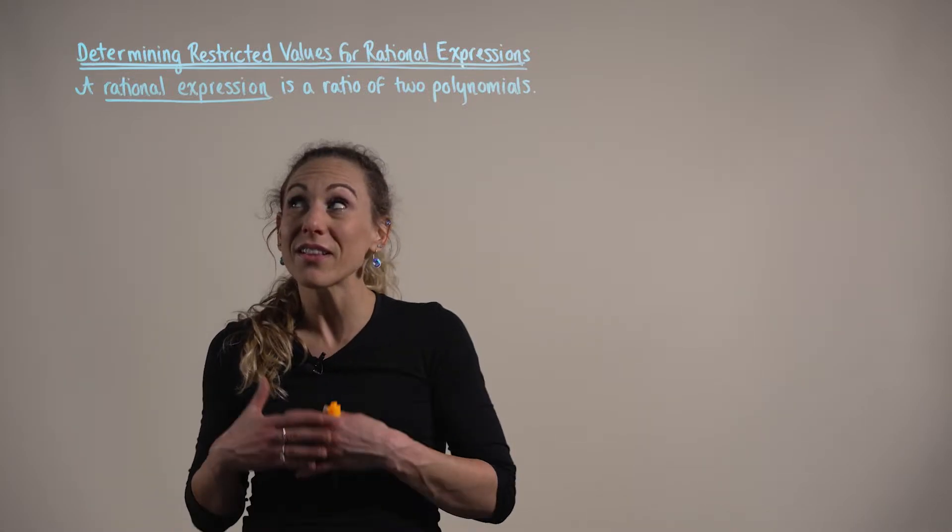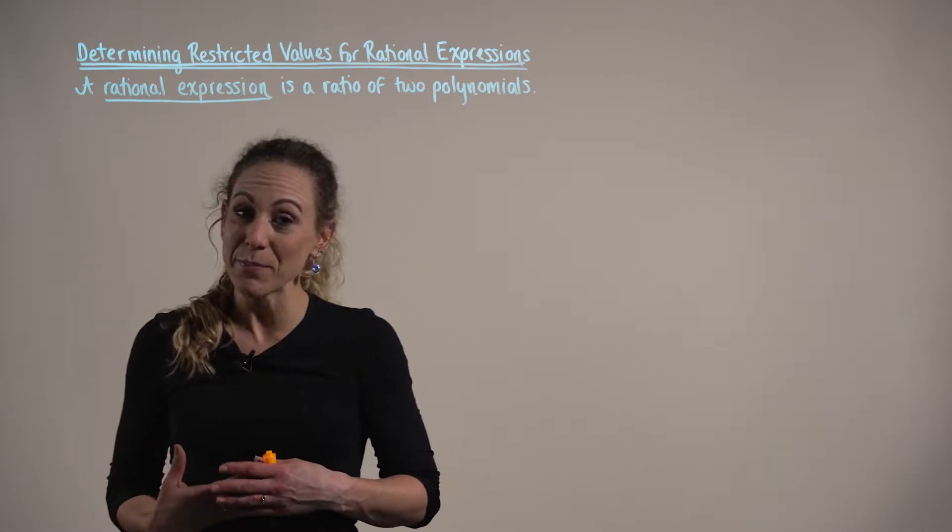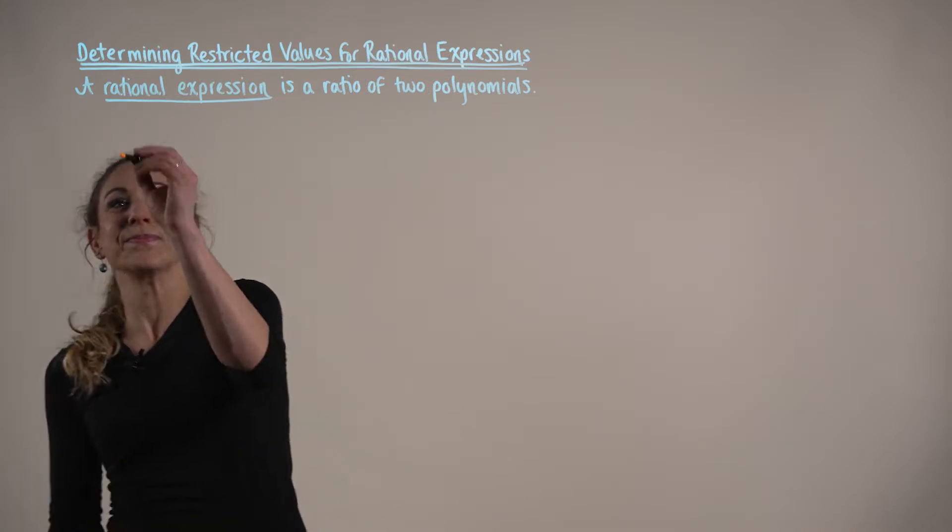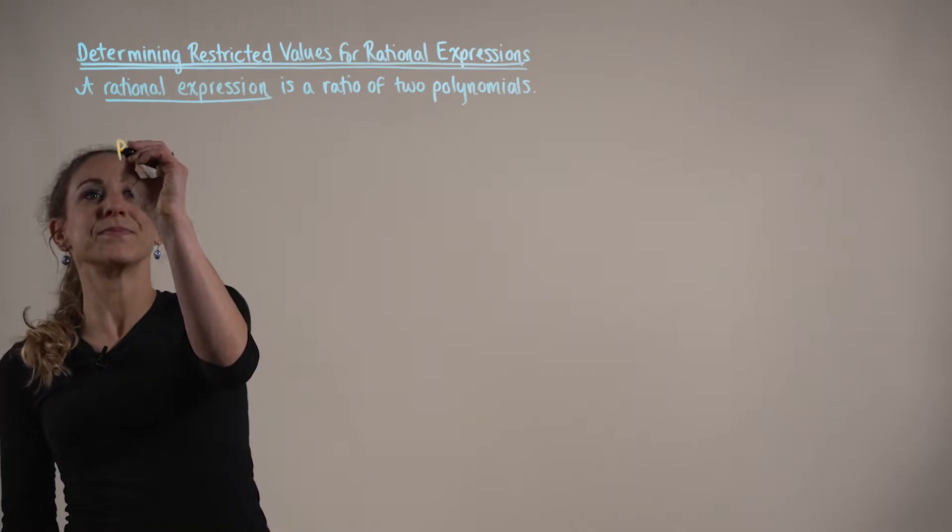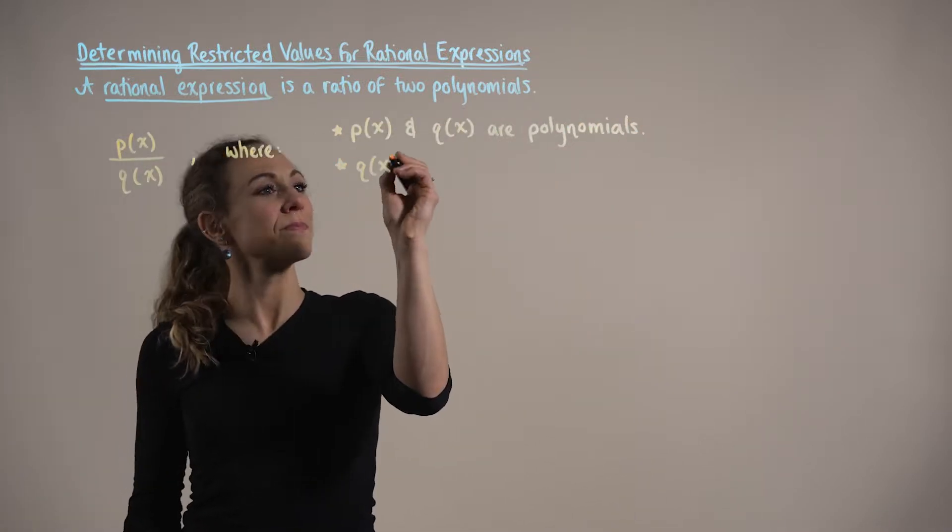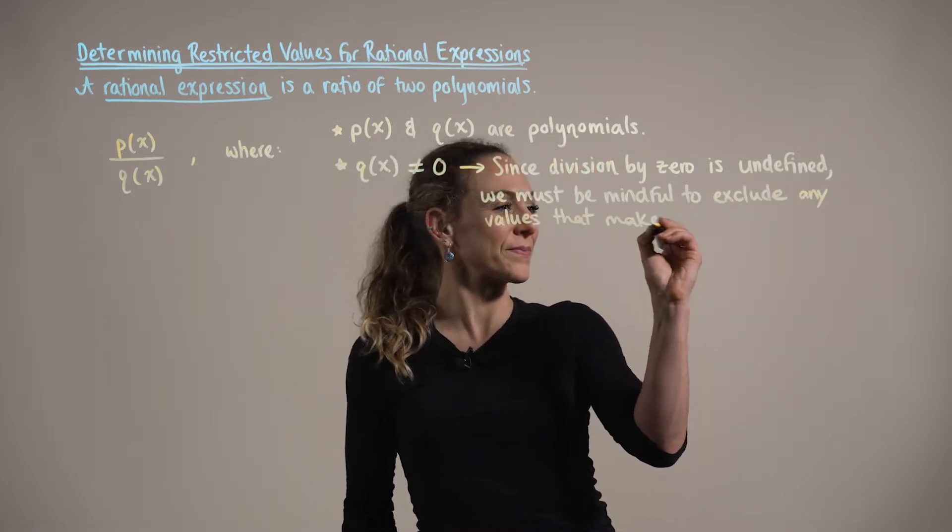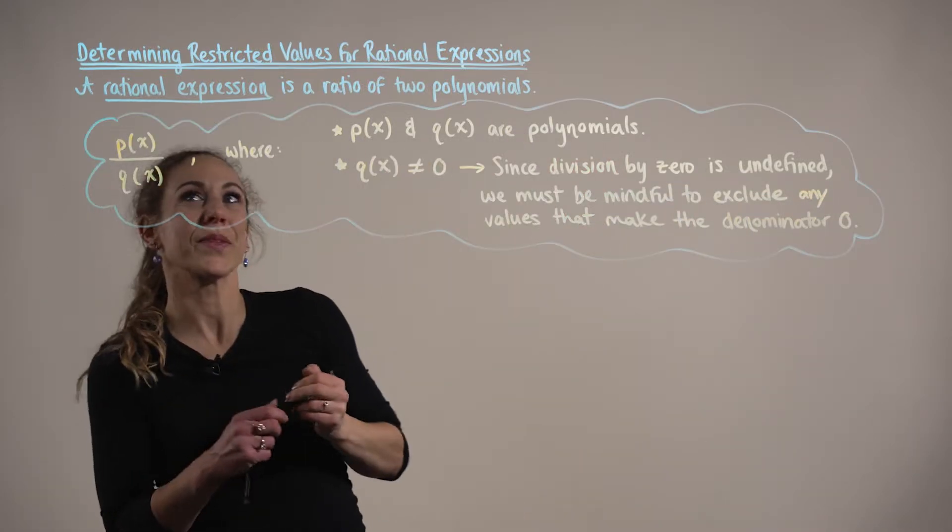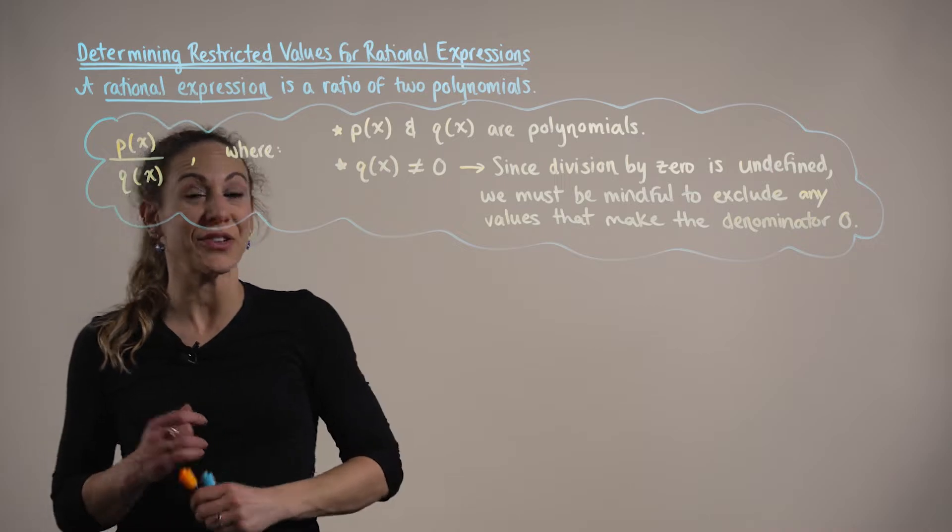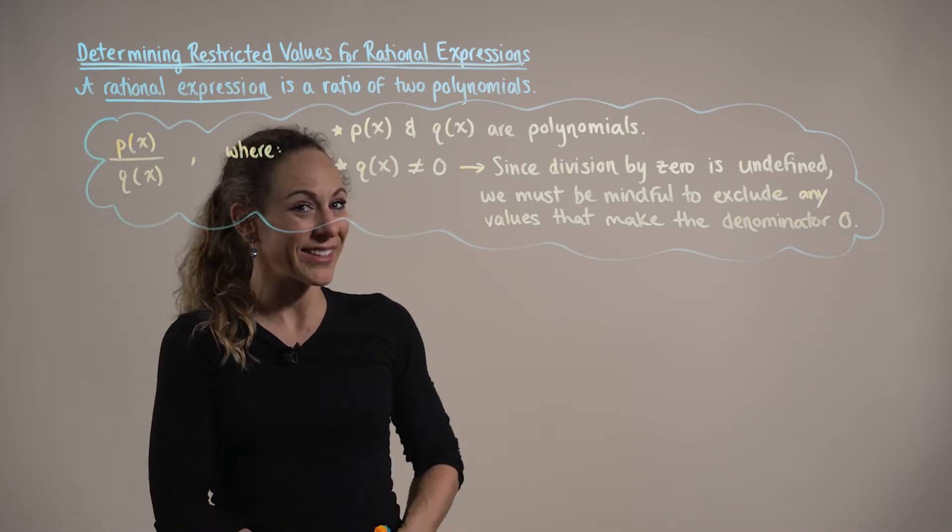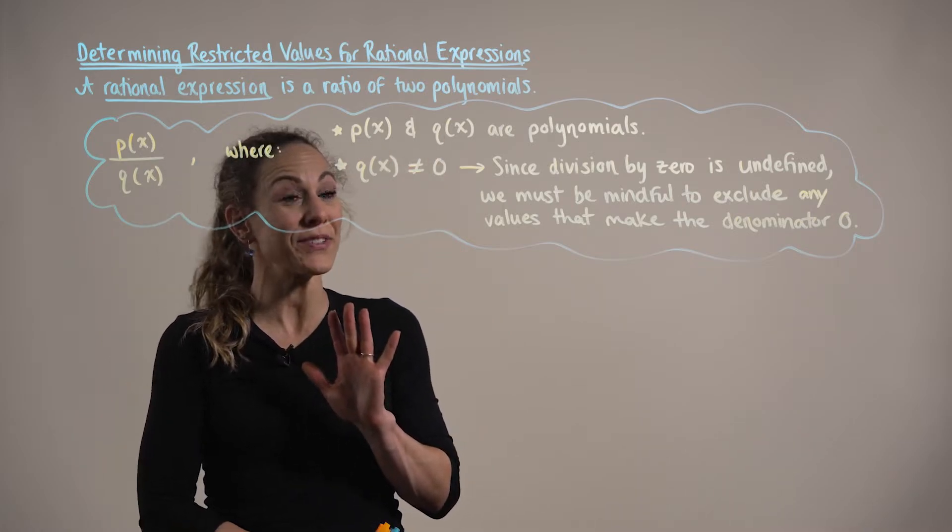To get us started, let's recall that a rational expression is simply a ratio of two polynomials. So we define a rational expression as the ratio of two polynomials p of x by q of x, where p of x and q of x are polynomials.